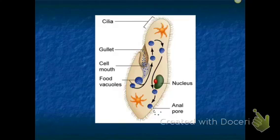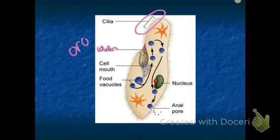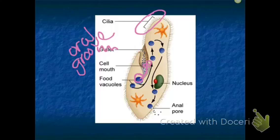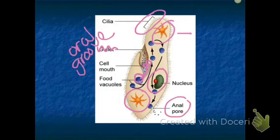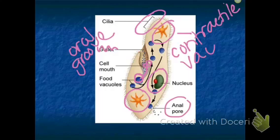The paramecium moves by cilia — all those little hairs. It has an oral groove, which is where food is swept in. Food vacuoles form around that incoming food, and that's where digestion occurs. The nucleus is the brain of the cell. There are anal pores where waste is released, and contractile vacuoles on either side to remove excess water.